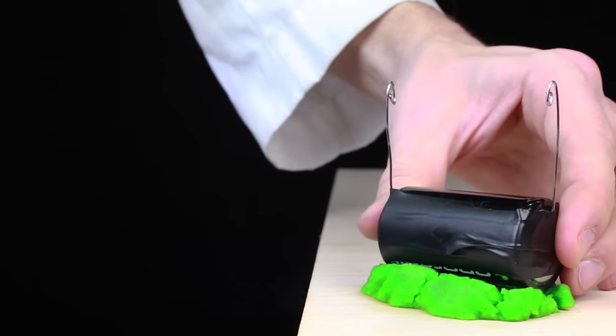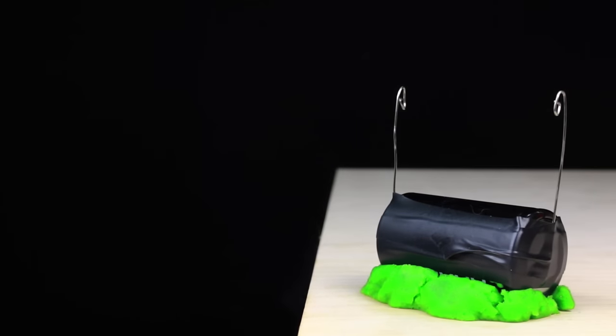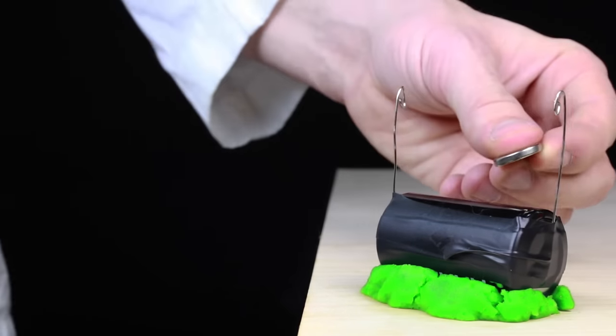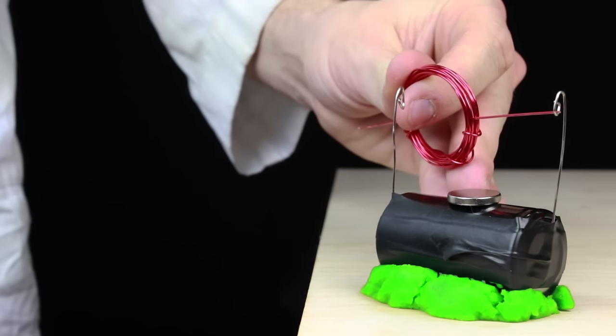Now you're ready to put your electric motor together. Start with the base of either clay or playdough. Place the D battery securely in the center with the loops of wire facing upwards. Now place a neodymium magnet on the top of the D battery. Finally, you're ready for your coil of wire.